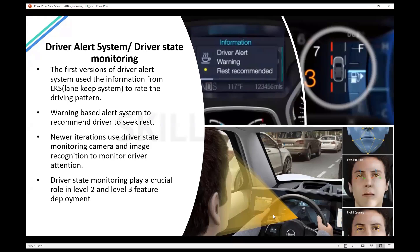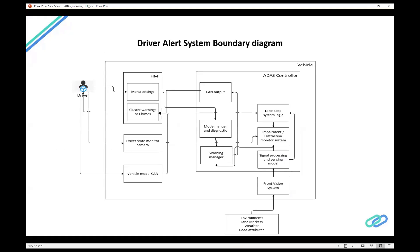We are slowly transitioning from level two to level three automation, and the driver state monitoring camera will be particularly very useful in level three systems. Even though a level three car is capable of doing all the driving, the driver is still responsible to pay attention. The driver state monitoring camera acts as a kind of policing system making sure the driver is still attentive. Looking at the boundary diagram — the environment consists of lane markers and the road. The front vision camera looks at lane lines to determine whether the car is within the lane, and that information goes into a sensor signal processing and computer vision detection model.